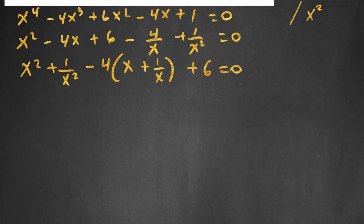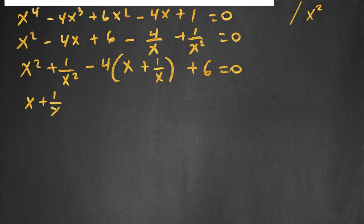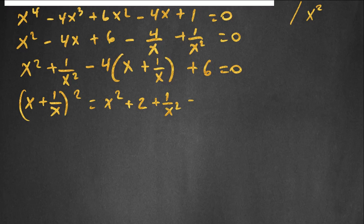If we look at x squared plus 1 over x squared, we know that when we square x plus 1 over x, we get x squared plus 2 plus 1 over x squared. So x squared plus 1 over x squared equals x plus 1 over x, all squared, minus 2.